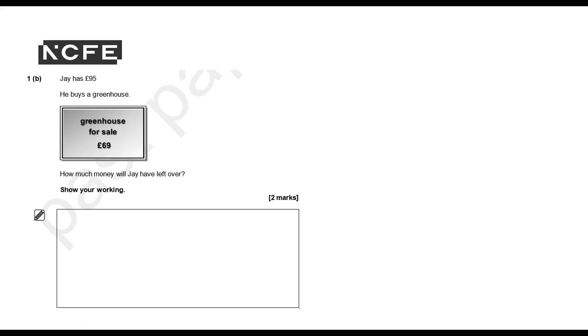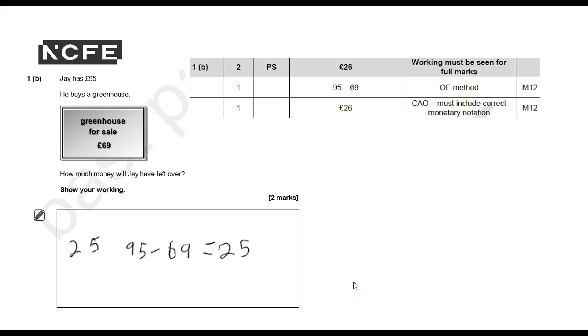So this first question 1B: Jay has £95. He buys a greenhouse. Greenhouse for sale £69. How much money will Jay have left over? Show your working. We've got a learner answer here and the mark scheme. If you are pausing, please pause now and decide how many marks to award.